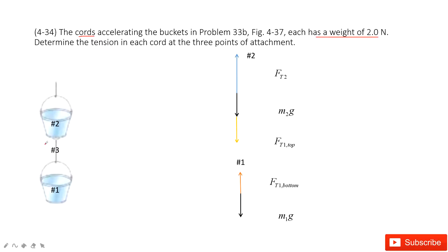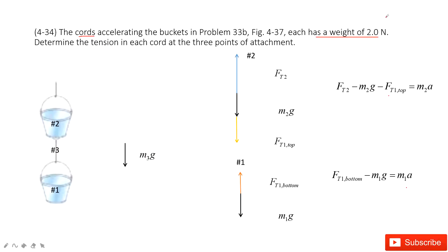Then we look at cord number 3. For number 3, we can write Newton's second law: FT2 minus M2g minus FT1 top; and FT1 bottom minus M1g equals M1 times acceleration. So these two come from Newton's second law. Then for number 3, the first force is gravity, which is 2 newtons as given.